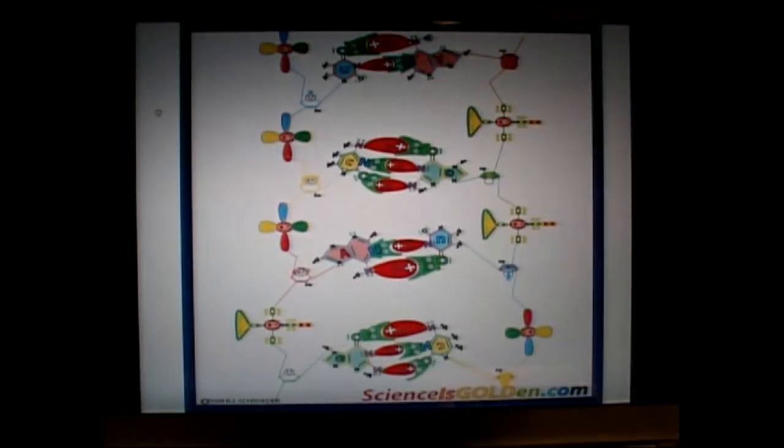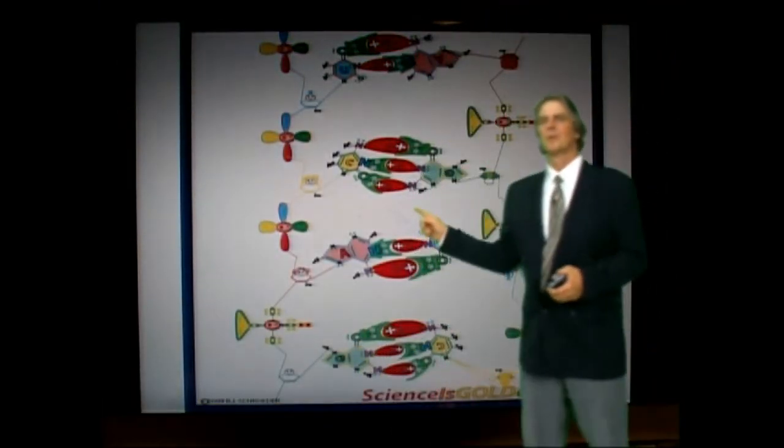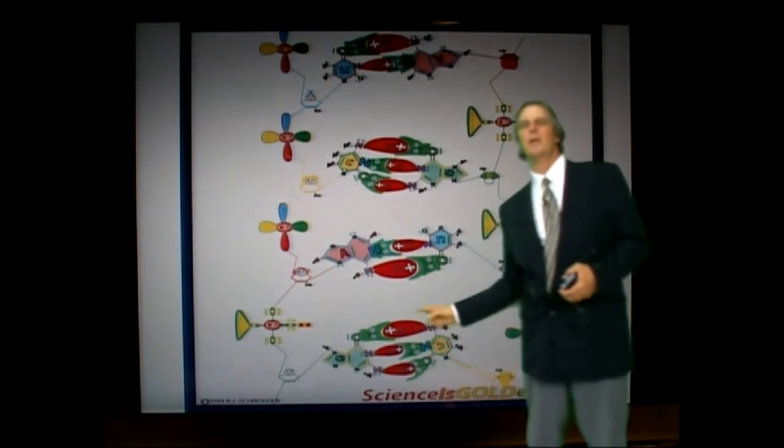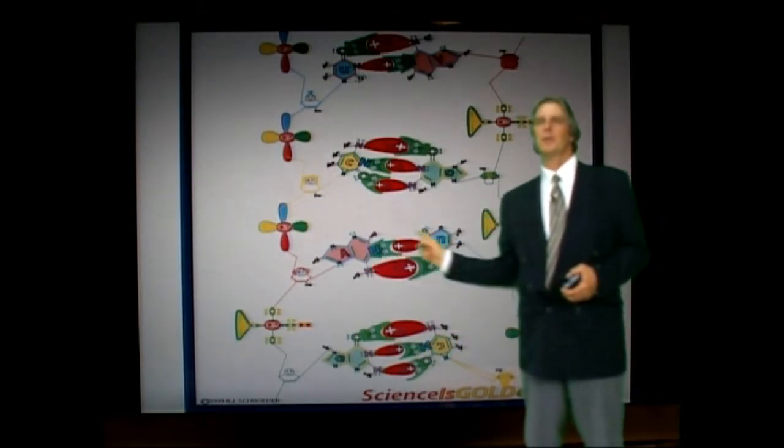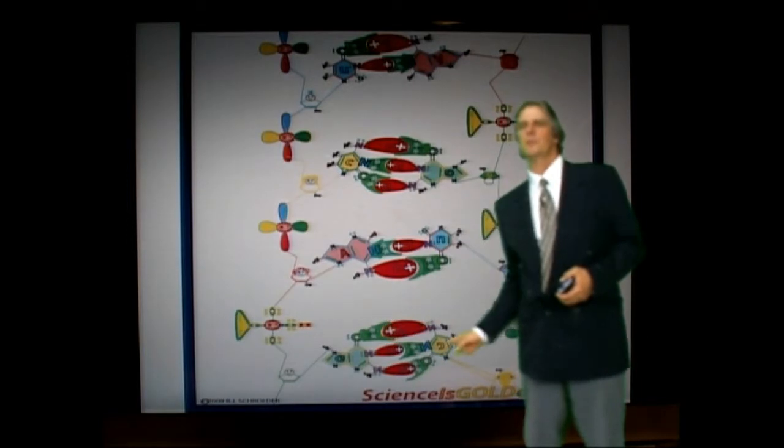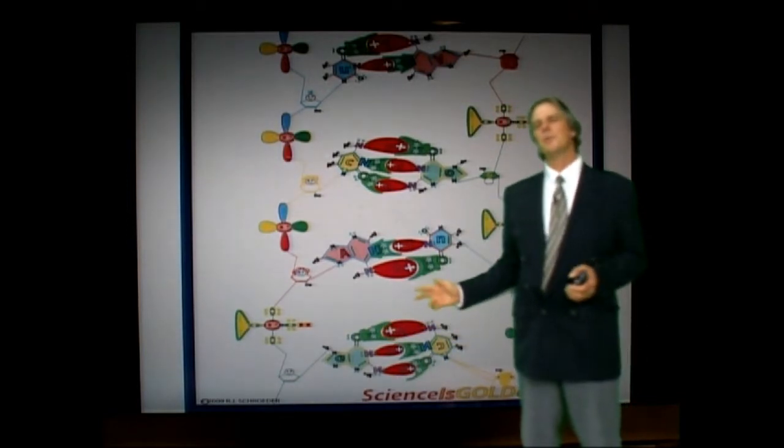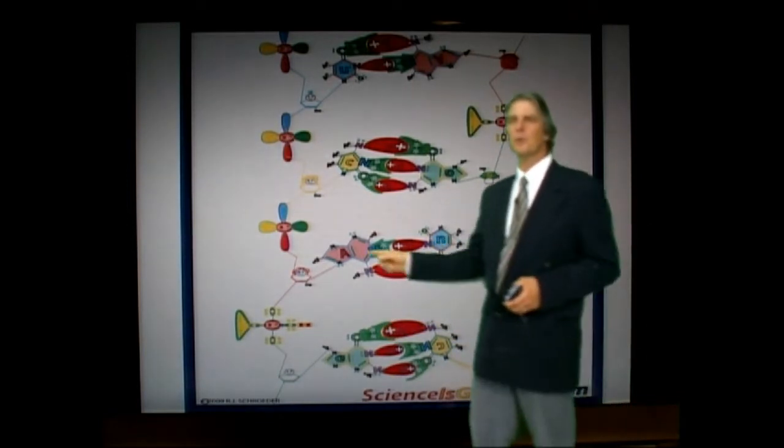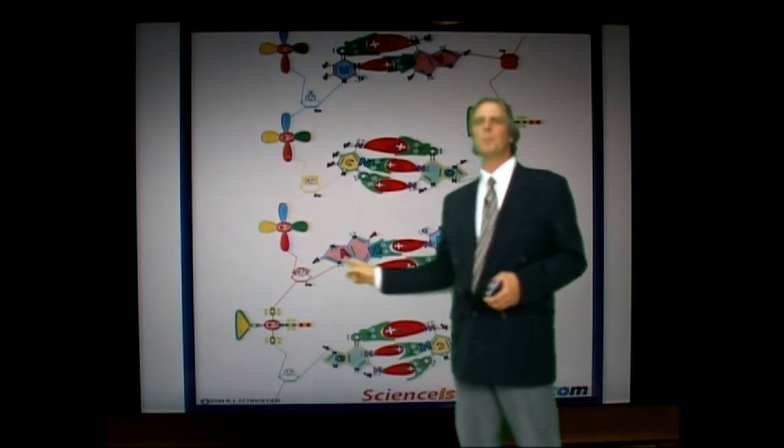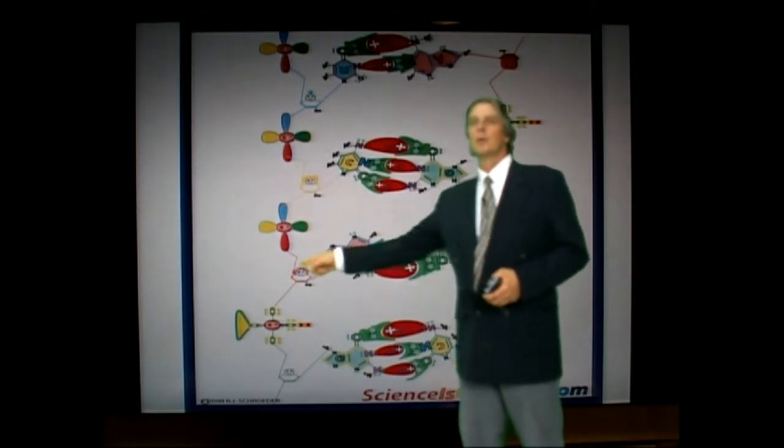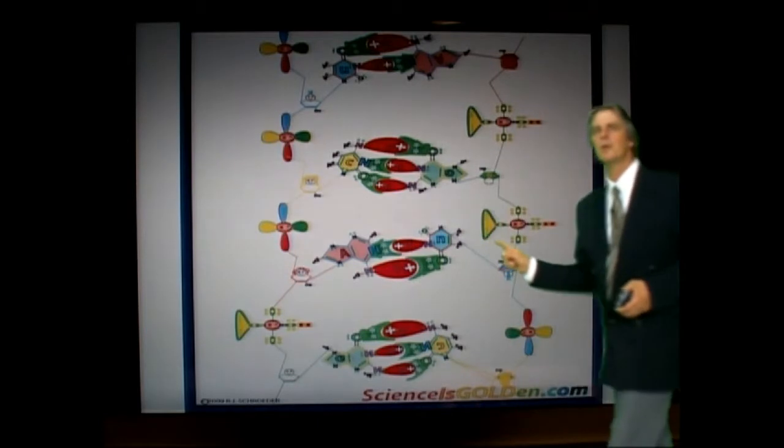This is our nucleic acids again. Two hydrogen bonds, three hydrogen bonds, double ring, single ring, double ring, single ring. So you see the way these come together. And what I'm proud of is the color coding, red for adenine, ruby, ruby red, curly hair. Ruby goes out with Ricky.